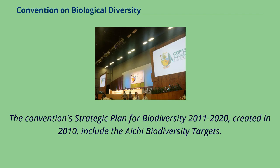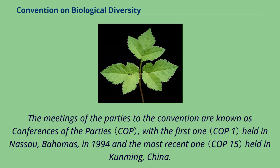The Convention's strategic plan for biodiversity 2011–2020, created in 2010, includes the Aichi Biodiversity Targets. The meetings of the parties to the convention are known as conferences of the parties, with the first one held in Nassau, Bahamas, in 1994, and the most recent one held in Kunming, China.